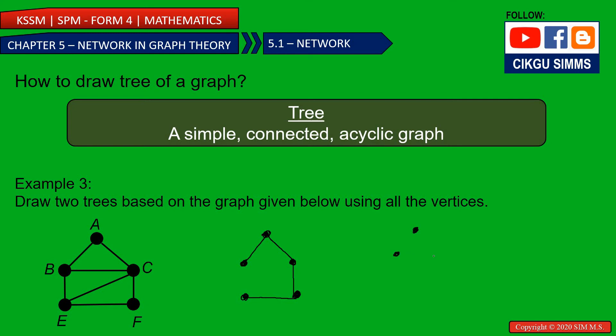And then I draw the 5 vertices. I want to draw the second tree. Also 4 lines. So I can draw: 1, 2, 3, 4. This can also be a tree.